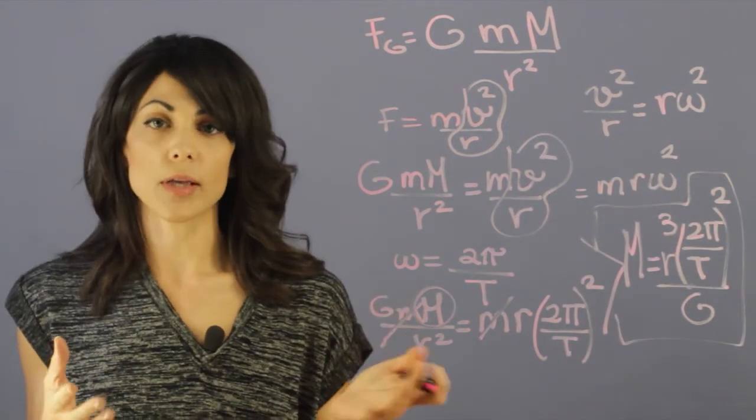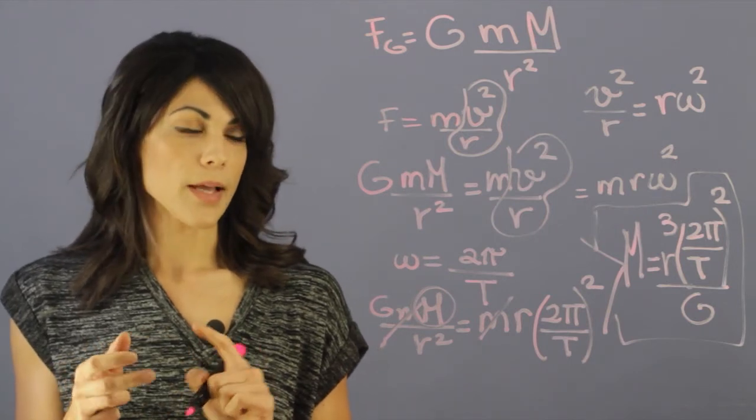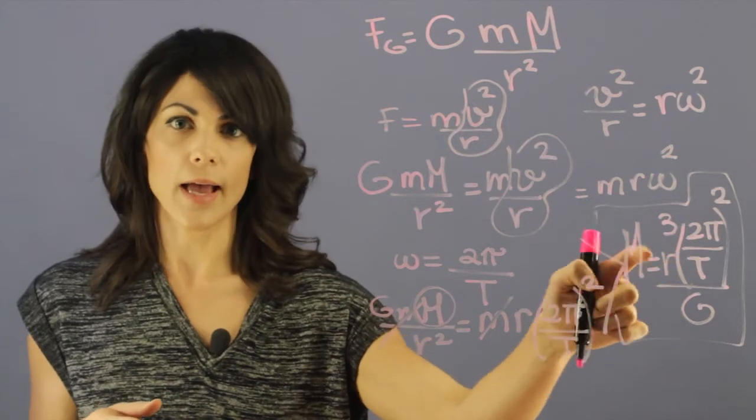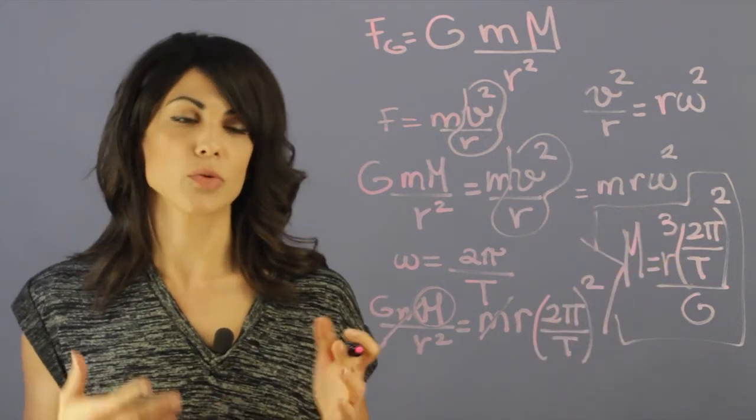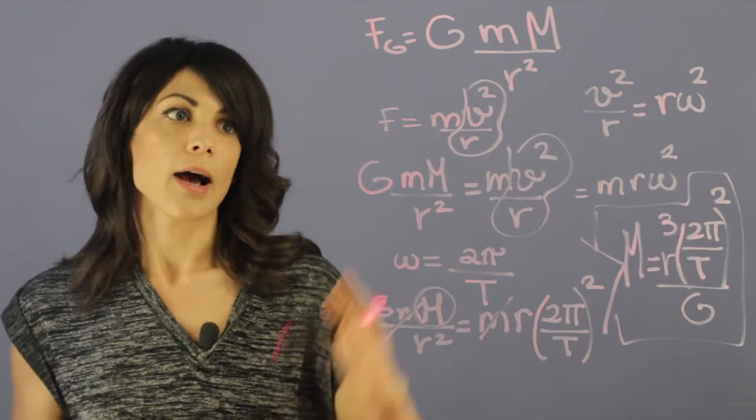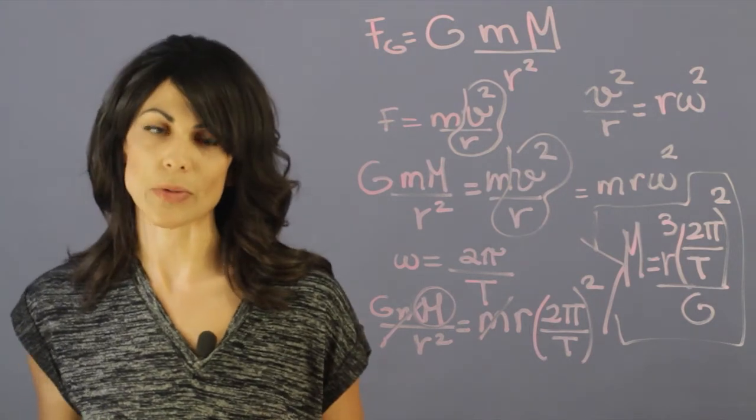Now if you plug in, Mars has two moons. It has Phobos and Deimos. So you can actually plug in the period and the distance away from Mars and you will get the mass of Mars. It's a nice little exercise that you can try. I tried to illustrate the basic equation so you can do it for any planet you like that has a moon.